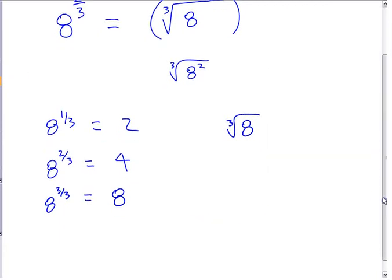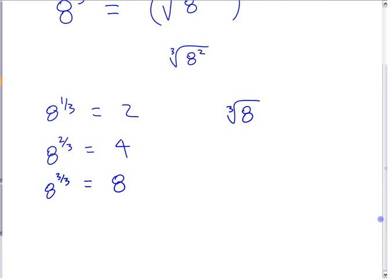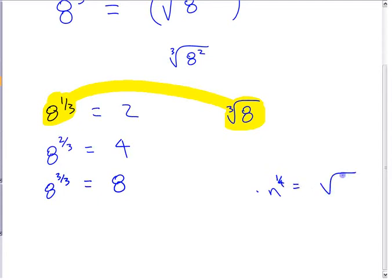So we have to make some connection between these things. You've seen before that raising something to the power of 1 third is the same as the cube root of that number. Similarly, n to the power of 1 quarter is the same as the 4th root of n, and n to the power of 1 seventh is the same as the 7th root of that number — you did an investigation where you hopefully noticed that.